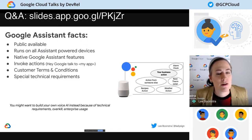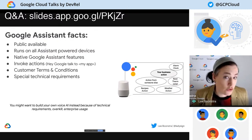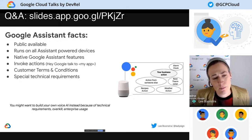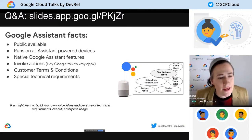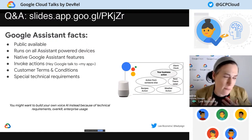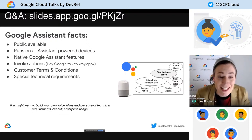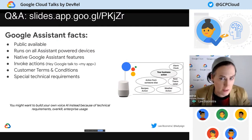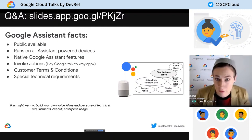It comes with consumer terms and conditions and has special technical requirements, such as the microphone cannot be open longer than 30 seconds. These are great reasons if you want to bring your brand to the public and receive lots of traction because of the Google ecosystem. But when you're building your own app that doesn't need to be on the Google Assistant ecosystem, or you have special technical requirements — like you want to stream and keep the microphone open for a very long time, or maybe you're an enterprise and need enterprise terms and conditions — then it's a way better use case to build it yourself in Google Cloud.